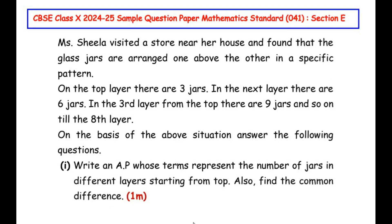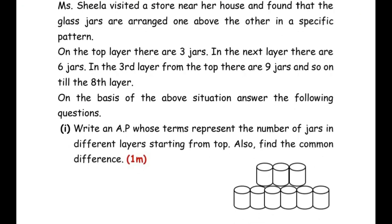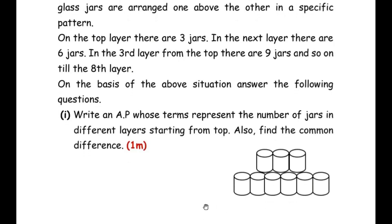Let us understand the question. Miss Sheila observed that glass jars were arranged in a particular pattern. The first layer has three glass jars, the second layer has six jars, the third layer has nine jars, and so on. There are eight layers of glass jars total. Taking this data into consideration, we need to generate a sequence.